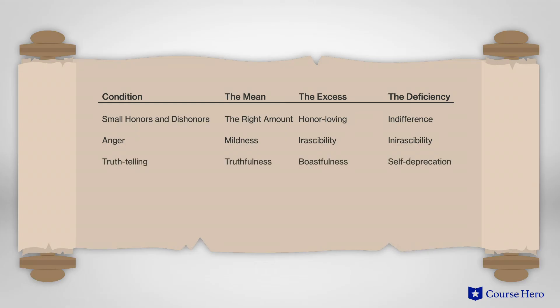In truth-telling, the mean is truthfulness, while the excess is boastfulness, and the deficiency is self-deprecation.